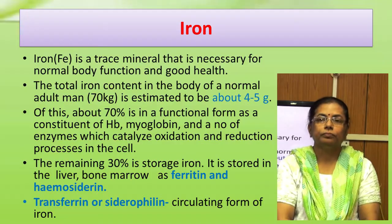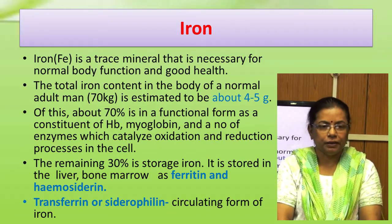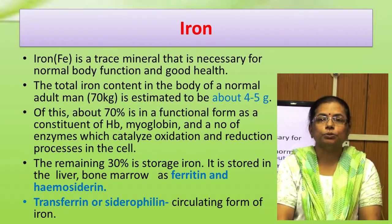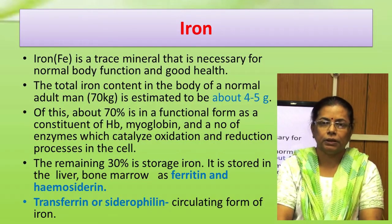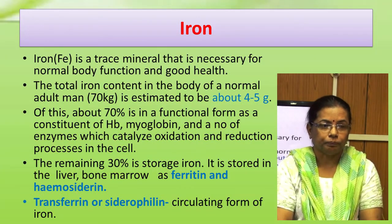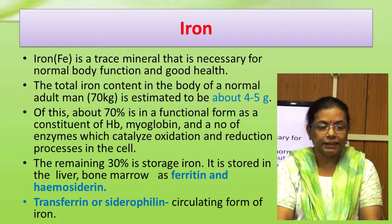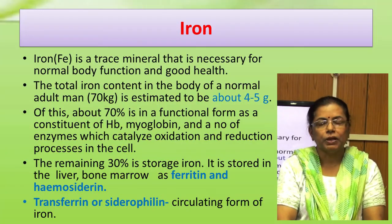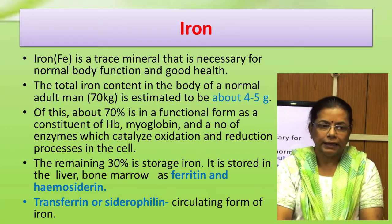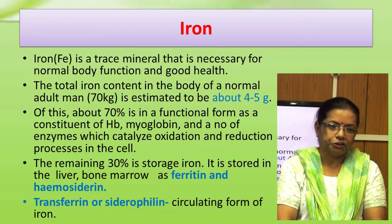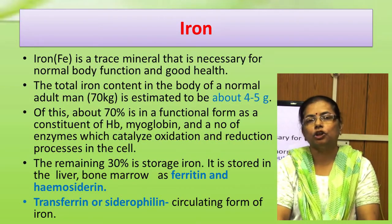Iron is a micromineral. It is a trace mineral necessary for normal body function and good health, found in only about 4 to 5 g in the human body. 70% of this is in functional form as a constituent of hemoglobin, myoglobin, and a number of enzymes that catalyze oxidation and reduction processes in the cell. The remaining 30% is storage iron, stored in the liver and bone marrow as ferritin and hemosiderin. Transferrin or siderophilin are the circulating forms of iron.